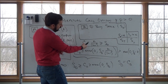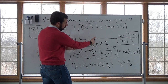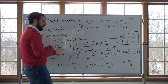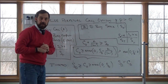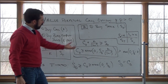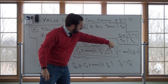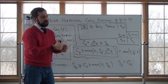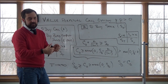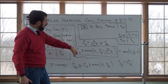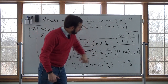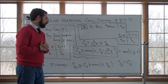Since A dominates B, we would never pay more for B than for A, so the value of Portfolio A must be greater than or equal to the value of Portfolio B today. This gives us the inequality: the call price today plus the present value of K — the face value discounted back to today — is greater than or equal to the stock price today. Rearranging, the call price is greater than or equal to the maximum of zero and the stock price minus the present value of K, the present value of the strike price.